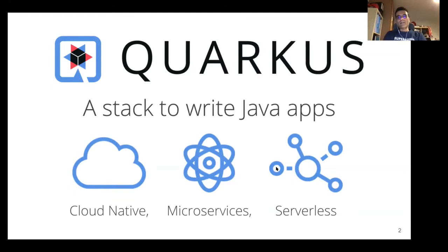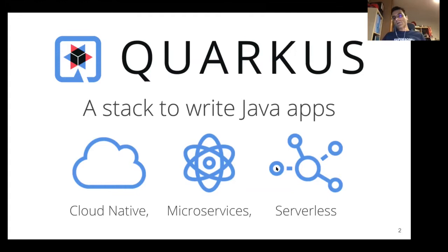Quarkus is a native Java stack for what we call cloud native apps — think about stuff that runs on Kubernetes environments, so naturally microservices. Quarkus also makes Java relevant for serverless environments. That doesn't mean you can't use Quarkus to write more monolithic style apps, but this is not its strong point. We also see people using Quarkus to write Kubernetes operators traditionally written in Go, IoT applications, or things related to edge computing.